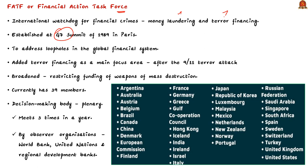Its secretariat is located at the OECD headquarters in Paris. Note that FATF also added terror financing as the main area of focus after the 9/11 terror attack in the US. Later, the focus was broadened to include restricting the funding of weapons of mass destruction.